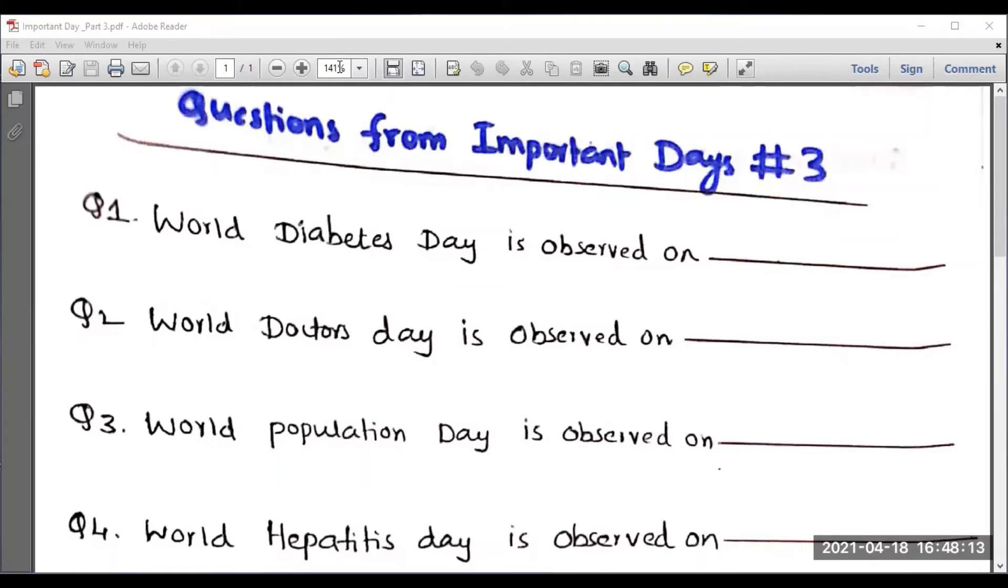So right from the beginning, let us have a brief discussion. World Diabetes Day is observed on 14th June. Second question, World Doctors Day is observed on 1st July.